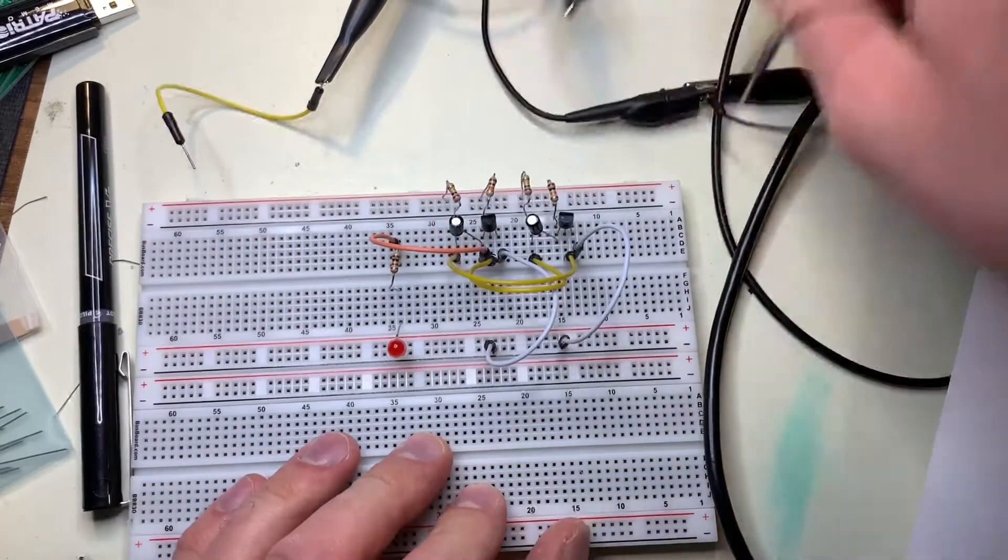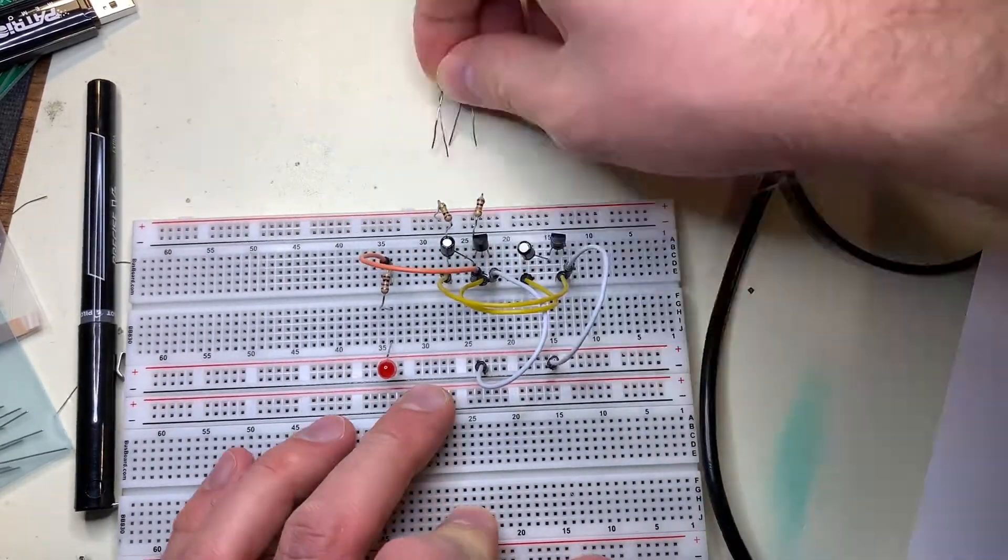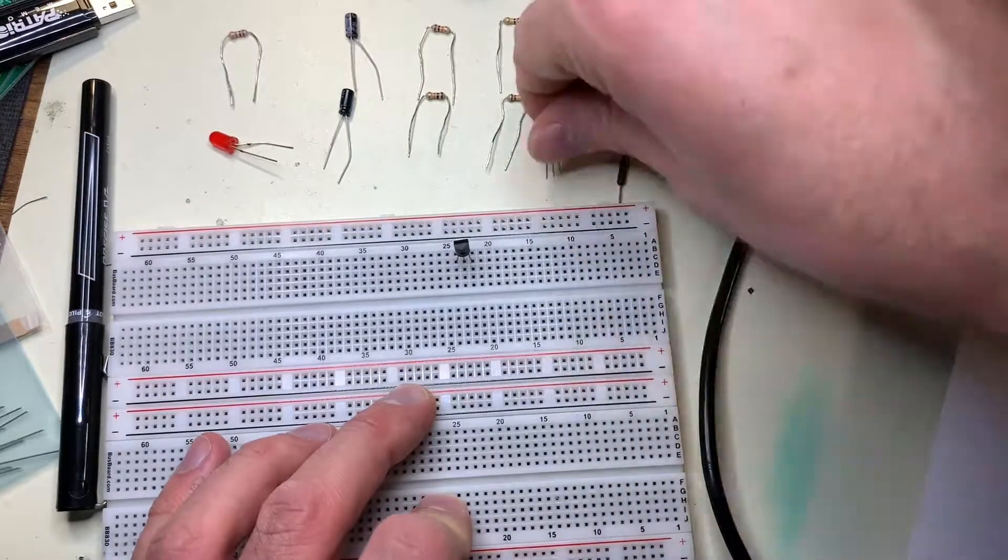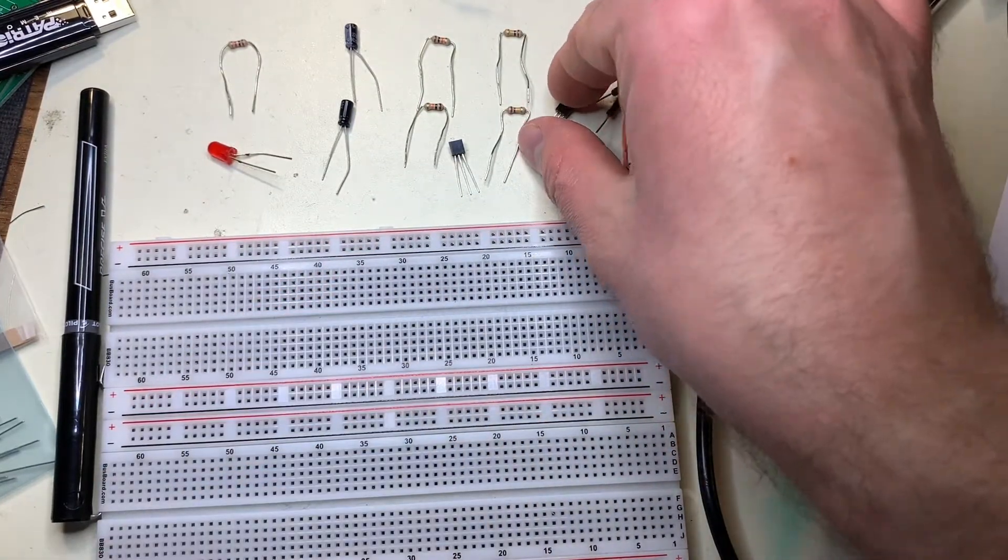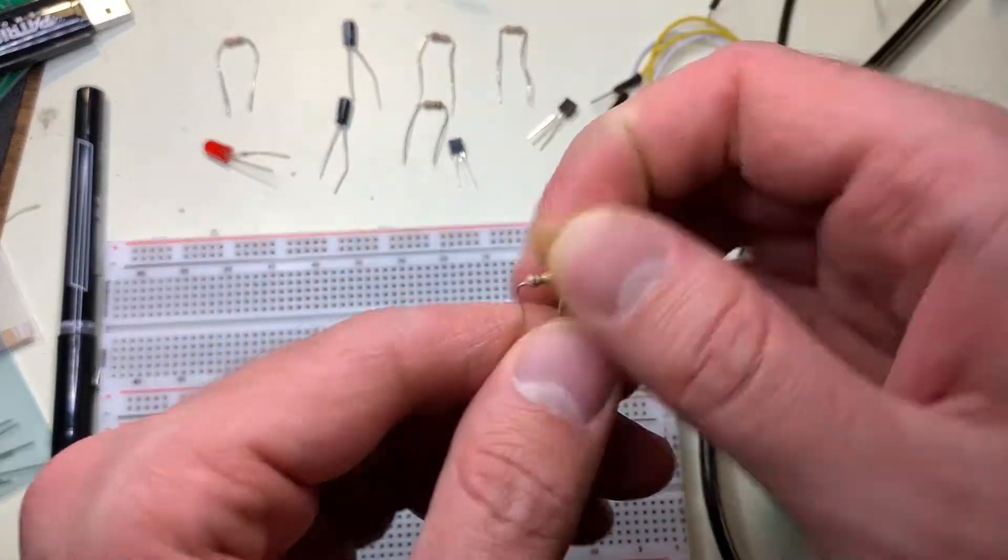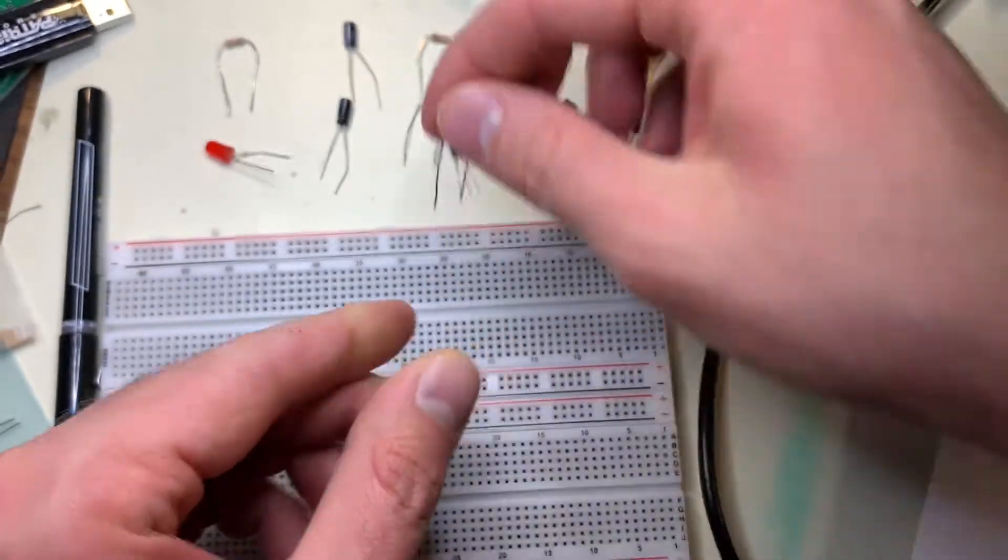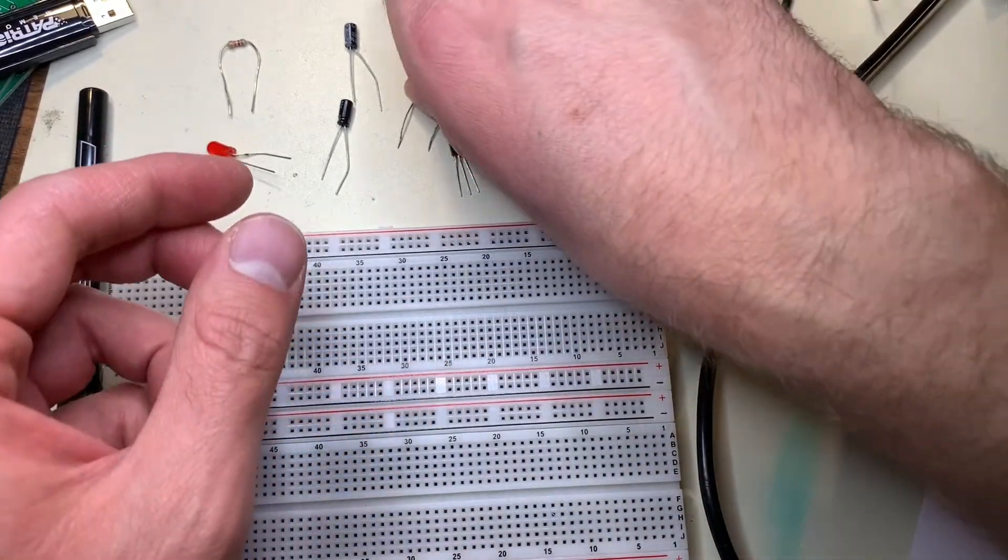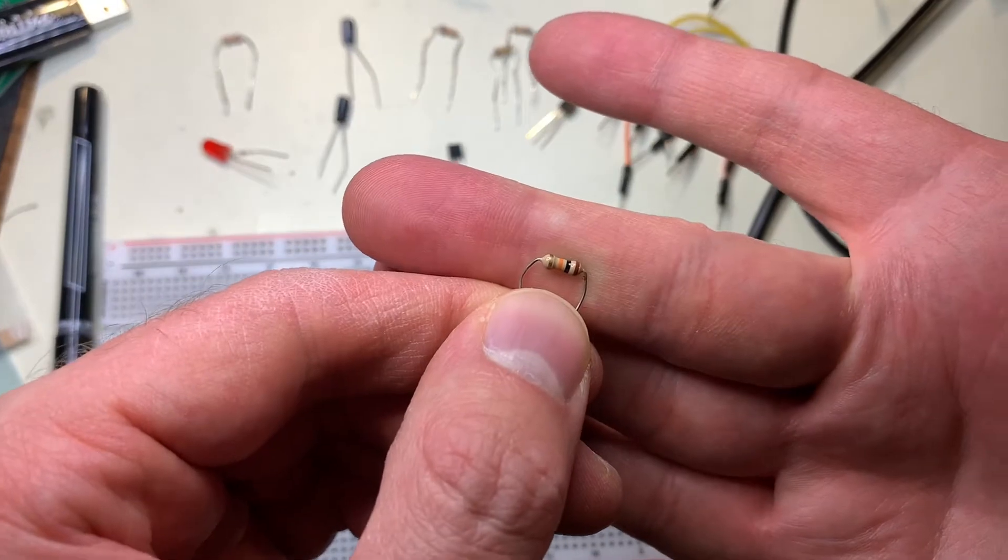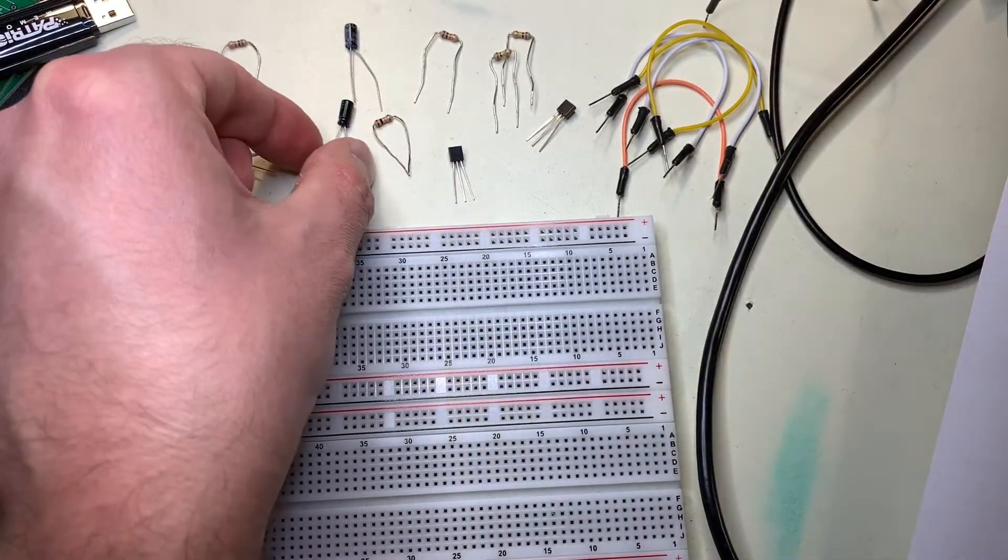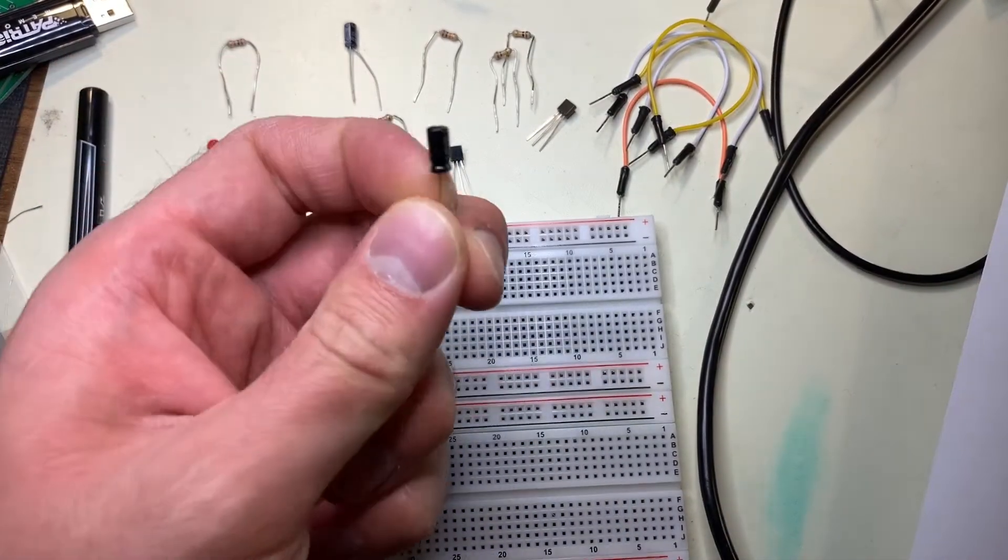So I'll go ahead and unwire everything. Okay, and here's the components you'll be needing. You'll need to have two 100 kiloohm resistors, two 10 kiloohm resistors, two of the 10 microfarad electrolytic capacitors,